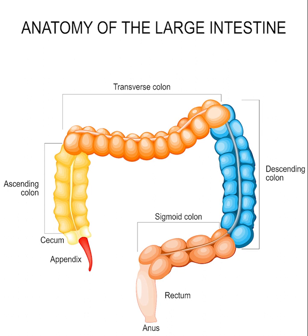About 1.5 liters or 45 ounces of water arrives in the colon each day. The colon is the longest part of the large intestine and its average length in the adult human is 165 inches or 166 centimeters, range of 80 to 313 centimeters, for males, and 61 inches or 155 centimeters, range of 80 to 214 centimeters, for females.